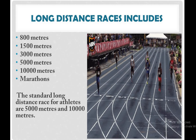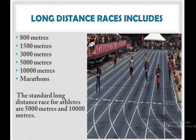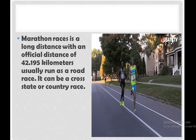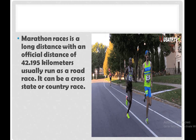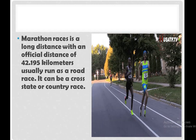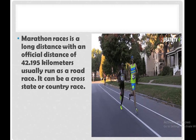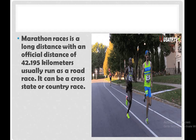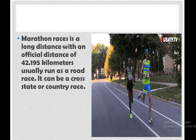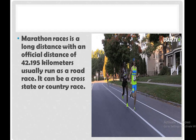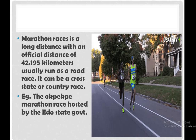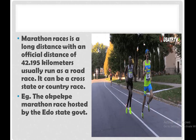The standard long-distance races for athletes are the 5,000-meter race and the marathon race. A marathon race is a long-distance race with an official distance of 42.195 kilometers, usually run as a road race. It can be a cross-state or cross-country race. An example of this race is a paper marathon race hosted by a state government.